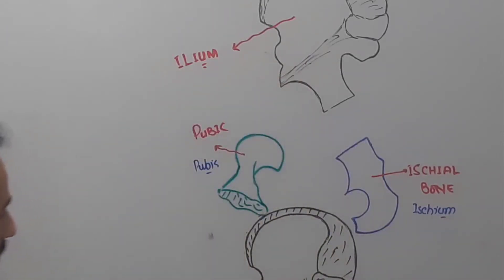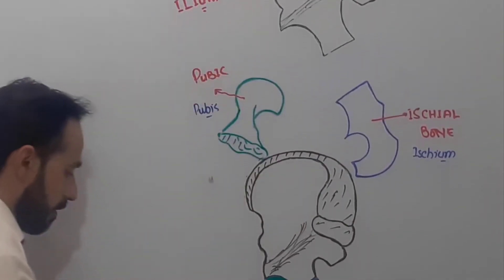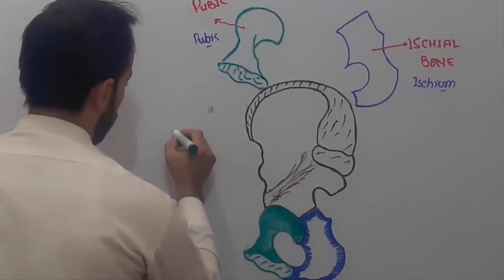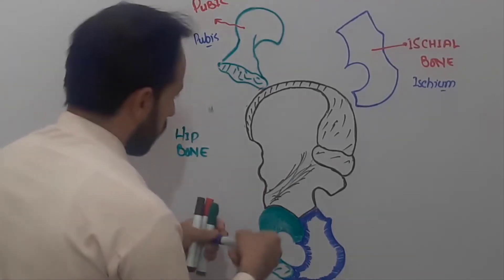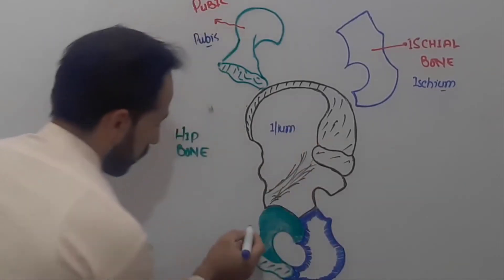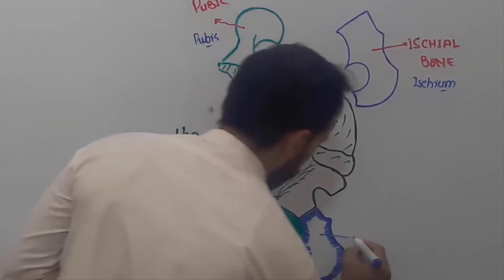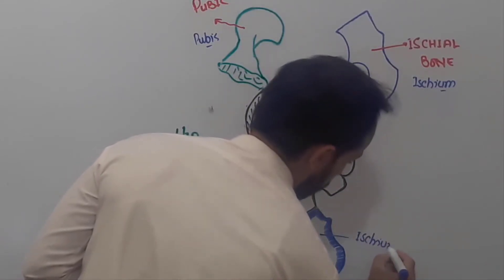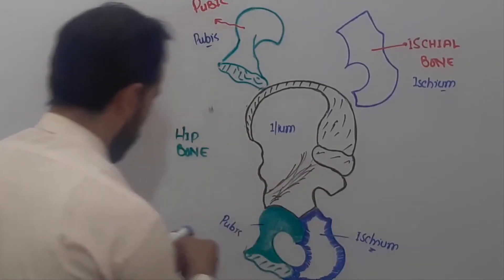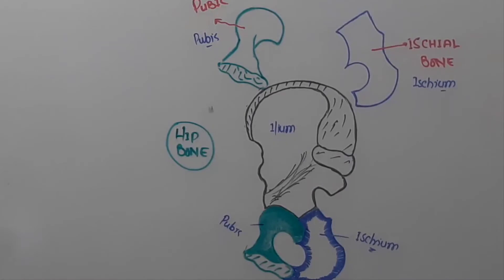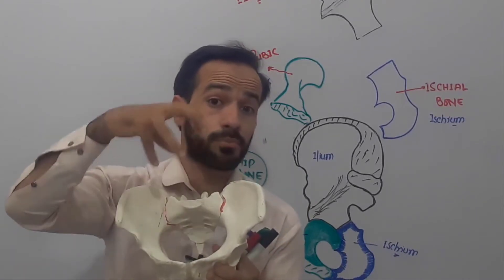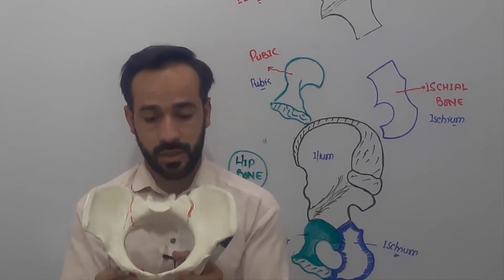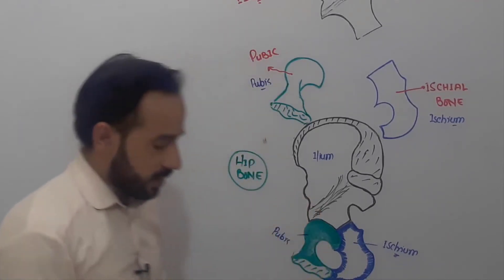These three bones — the ilium, pubis, and ischium — unite together and make one bone called the hip bone. There is one hip bone on the right side and one on the left side. Both of them unite and make the pelvic cavity, in which the important viscera of both female and male are protected and located.